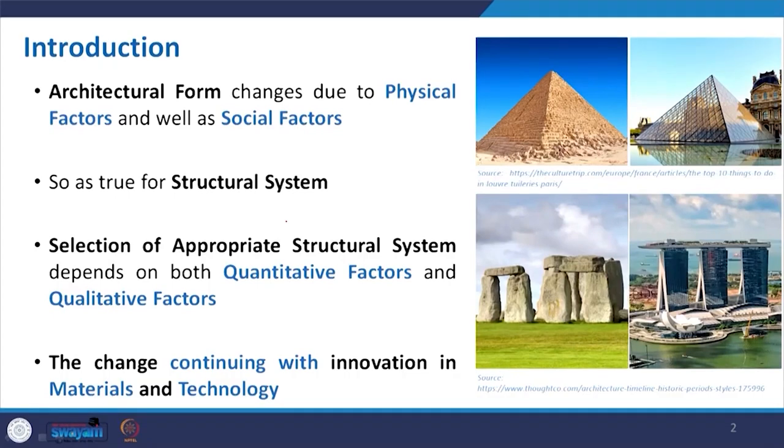Basically, architectural form — and before that structural form — actually changed over time due to some physical factors as well as some social factors. Earlier, technology was not well known, not much material was available, and methods of construction were not that advanced. So people built their shelter or any structure based on available materials, mostly stone. We have already seen in the last lecture that they created megalithic structures made of stone slabs, then post-and-lintel, and these are some of the physical factors that influenced it.